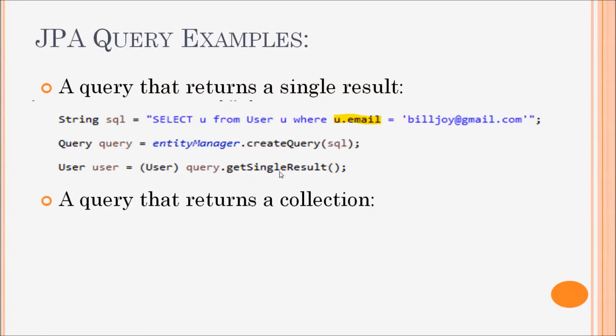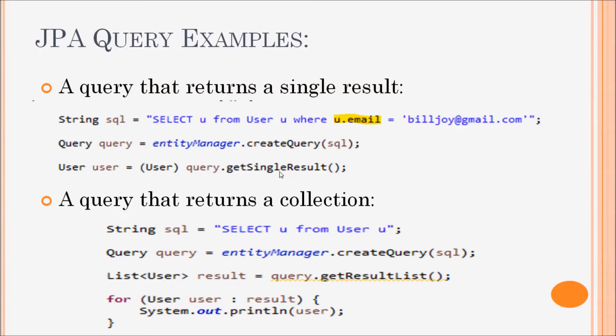And here is the second example that executes a query that returns a collection of values, such as a list of mapped objects from the database. You can see we use the getResultList method of the query object.